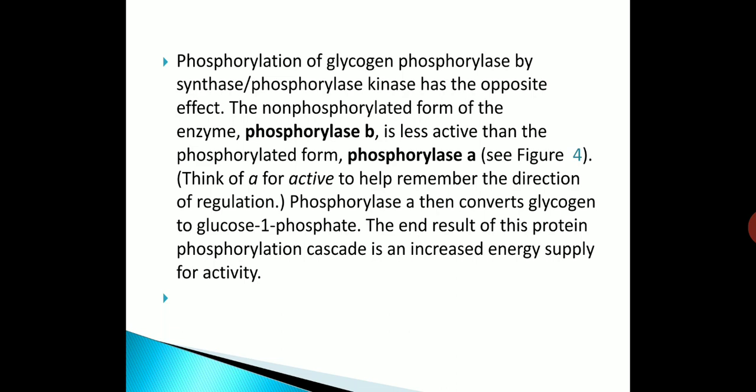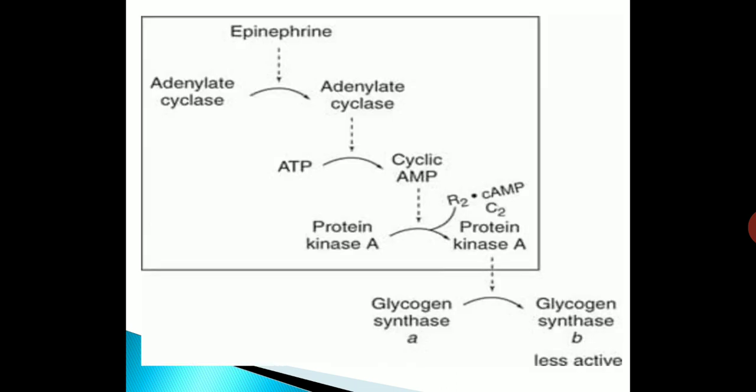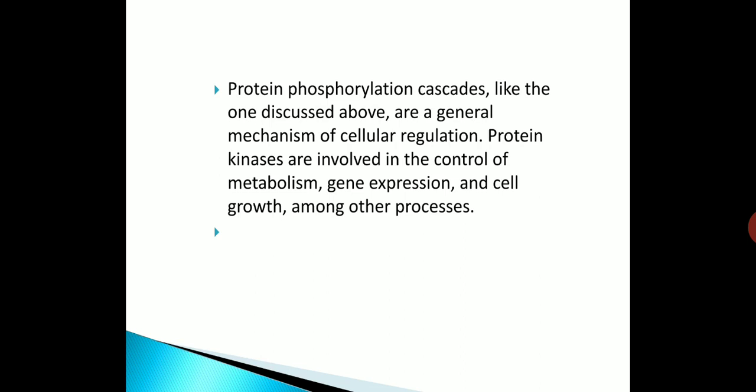A helpful mnemonic is 'A for active' to remember the direction of regulation. Phosphorylase A converts glycogen to glucose 1-phosphate. The end result of this protein phosphorylation cascade is an increased energy supply for activity. Protein phosphorylation cascades like this are a general mechanism of cellular regulation, with protein kinases involved in the control of metabolism, gene expression, and cell growth, among other processes.